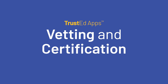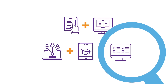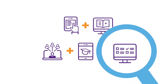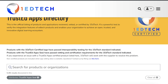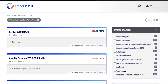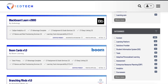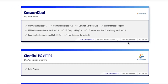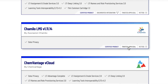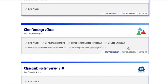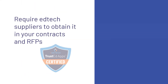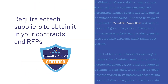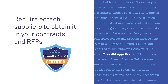Require Trusted Apps Vetting and Certification. OneEdTech vets the privacy policies of thousands of applications and makes the detailed vetting results accessible to OneEdTech members in the Trusted Apps Directory. Look for the Trusted Apps Seal to identify applications certified in data privacy. And if applications don't have the seal, require EdTech suppliers to obtain it in your contracts and RFPs.